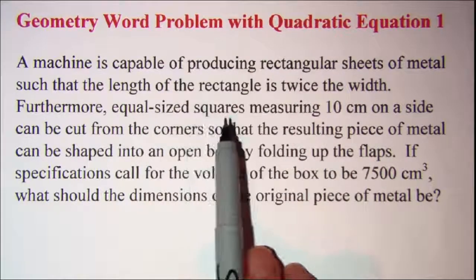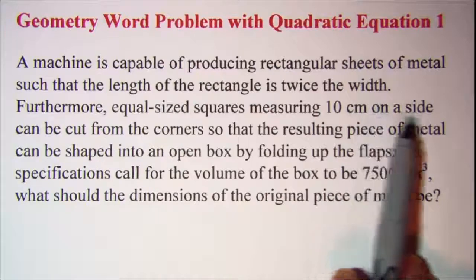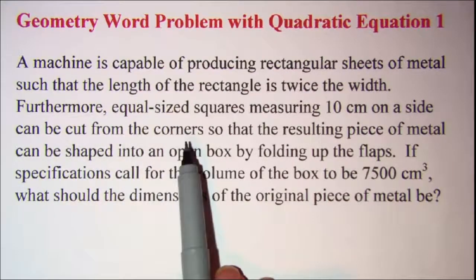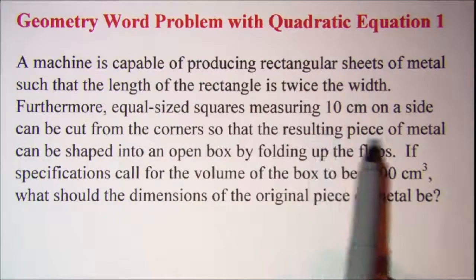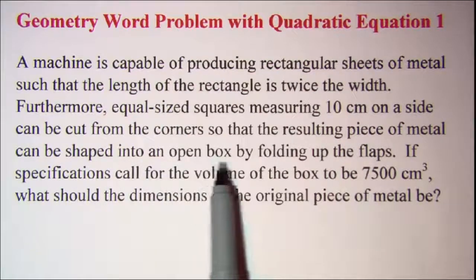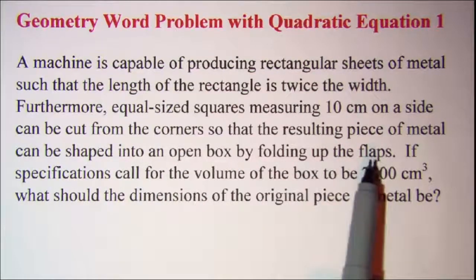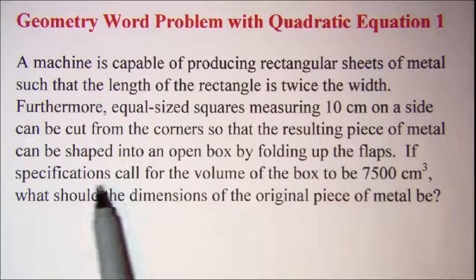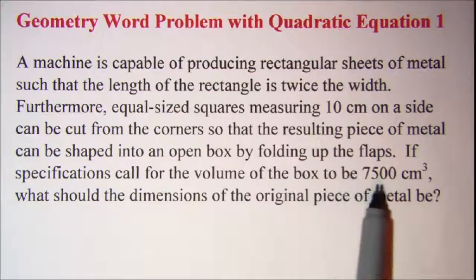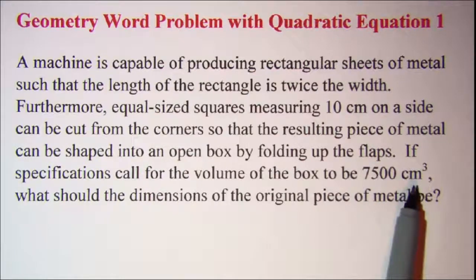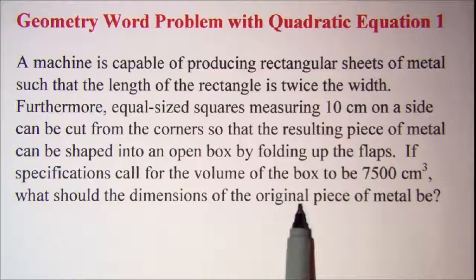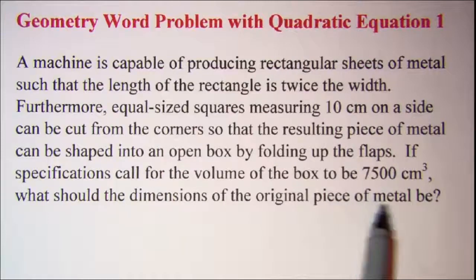equal size squares measuring 10 cm on a side can be cut from the corners so that the resulting piece of metal can be shaped into an open box by folding up the flaps. If specifications call for the volume of the box to be 7500 cm³, what should the dimensions of the original piece of metal be?